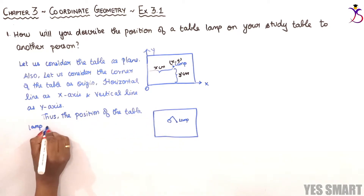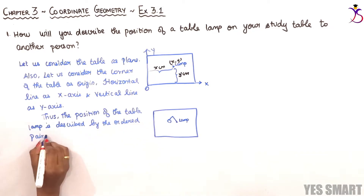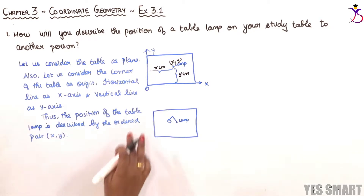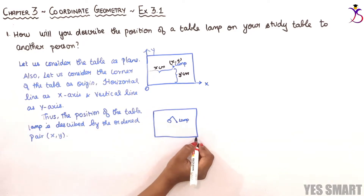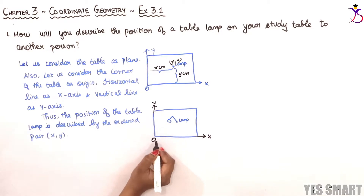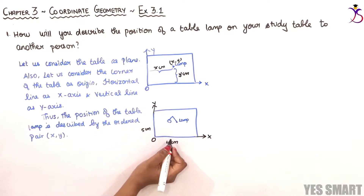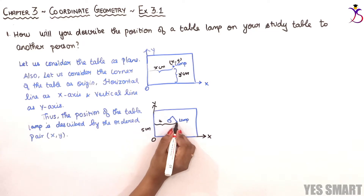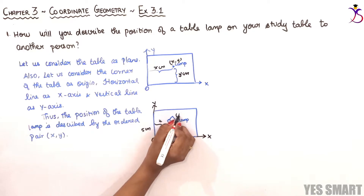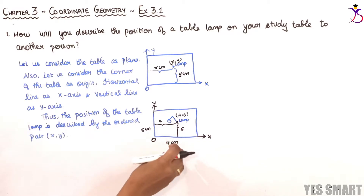Thus the position of the table lamp is described by the ordered pair (x, y). For example, let's consider this as the x-axis, this as the y-axis, and here comes the origin. If the horizontal distance is 4 centimeters and the vertical distance is 5 centimeters, then the position of the lamp on the study table is (4, 5).